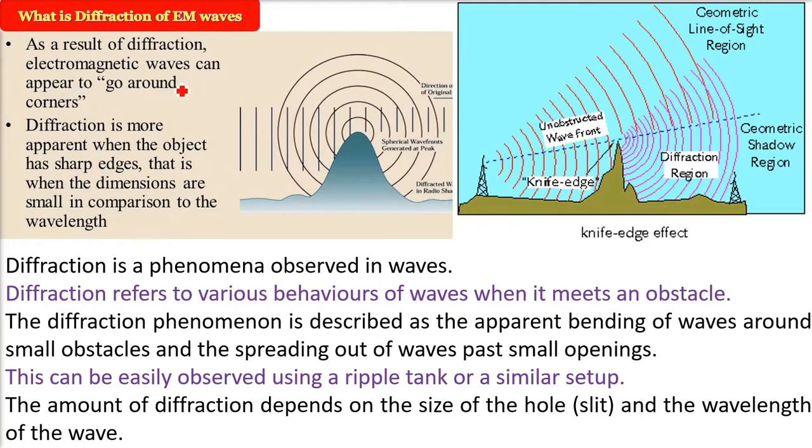because of the diffraction, the electromagnetic waves, it appears that they go around the corner. They go because they bend around the corner and diffraction is more apparent when we have a very sharp edge.